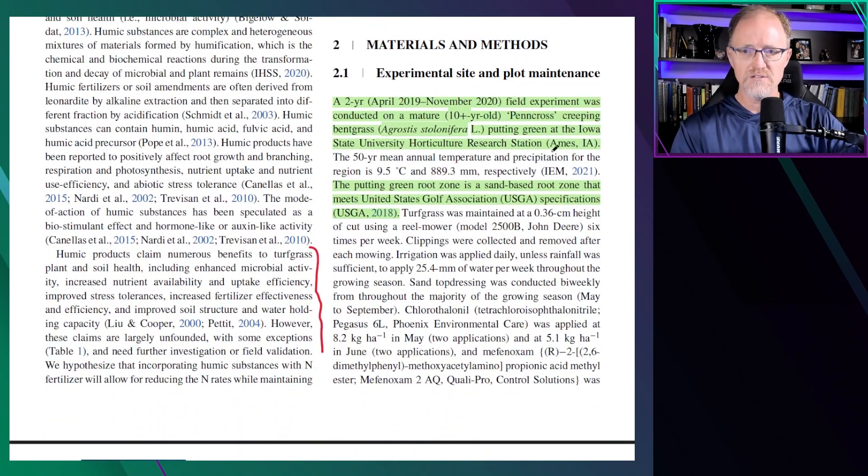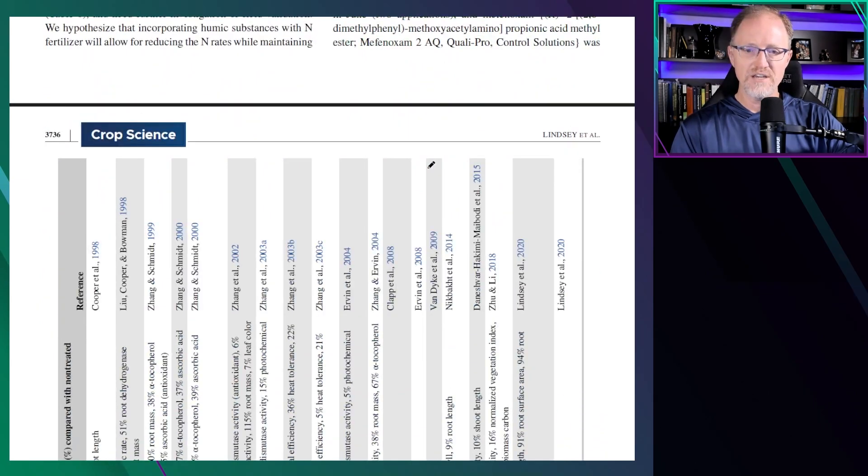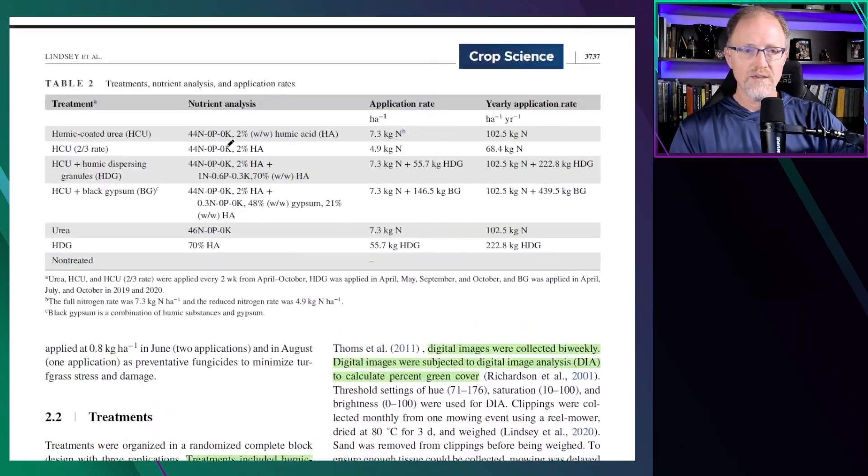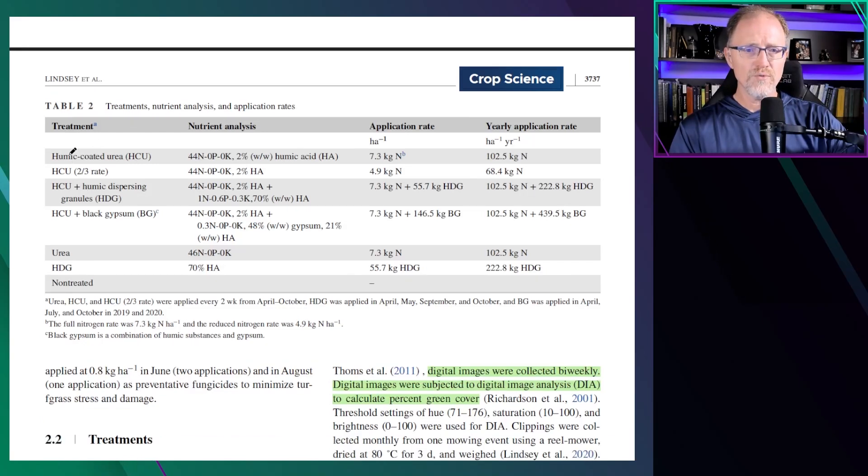This was a two-year study conducted on Penn Cross Creeping Bent Grass in Ames, Iowa. It was a USGA-spec green. The treatments were a humic-coated urea. They applied with the nitrogen at around two pounds per year and they were applied every other week during the growing season.